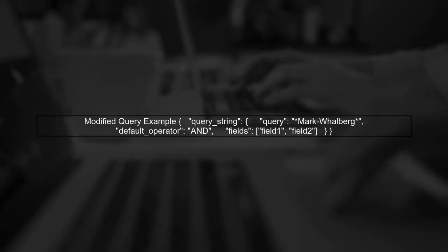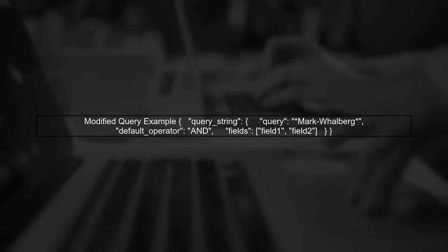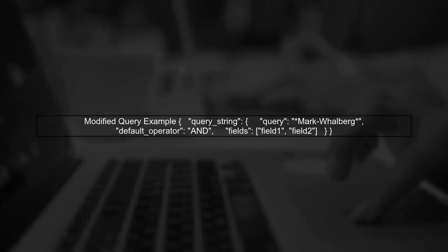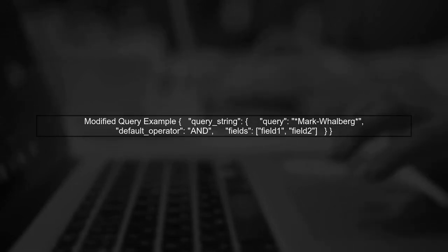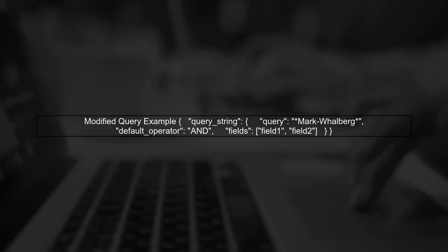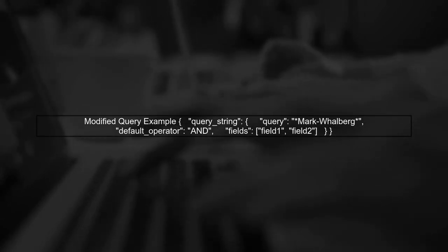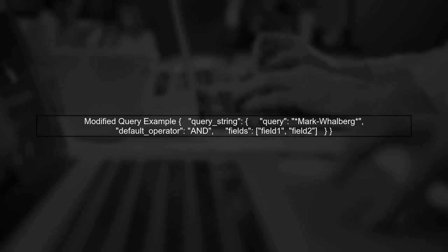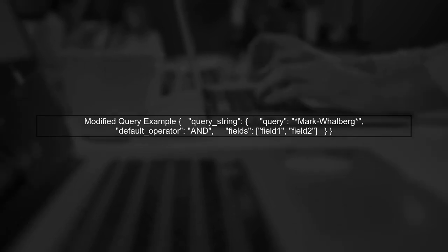To successfully search for Mark Wahlberg, you can modify your query. Instead of using the query string with the minus sign, use a wildcard search. This allows you to include the minus sign in your search term. By using the wildcard syntax, you can ensure that Elasticsearch looks for the entire string, including the minus sign, and this should return the expected match.